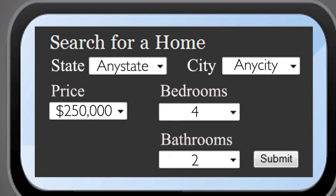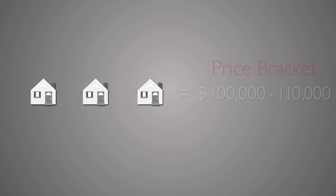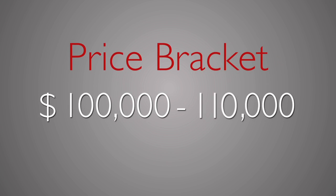The search results group homes in price brackets, often displayed in $10,000 or $25,000 increments. These brackets drive what buyers see.